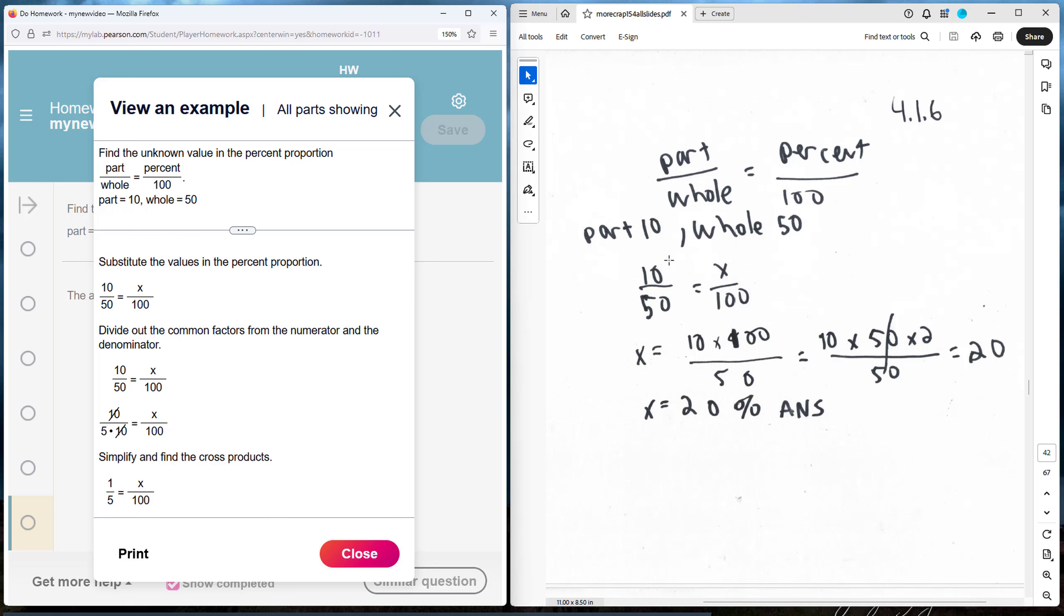Solving for x, we can cross multiply and divide. So I say 10 times 100 divided by 50. The 50s cancel out. My answer is 20.